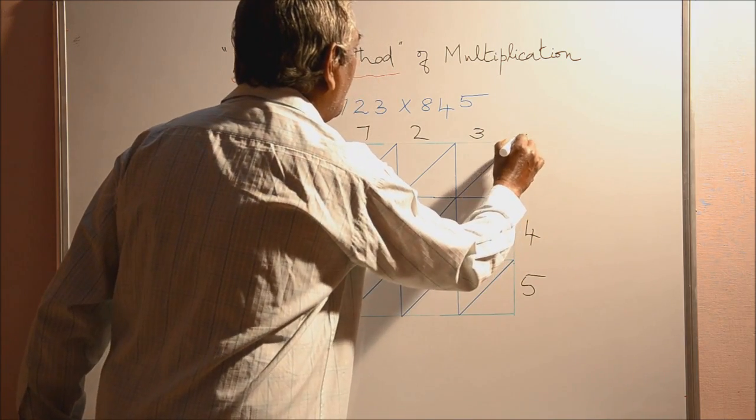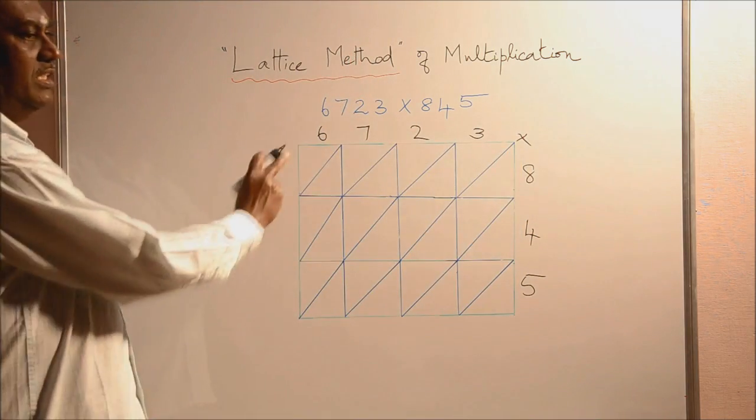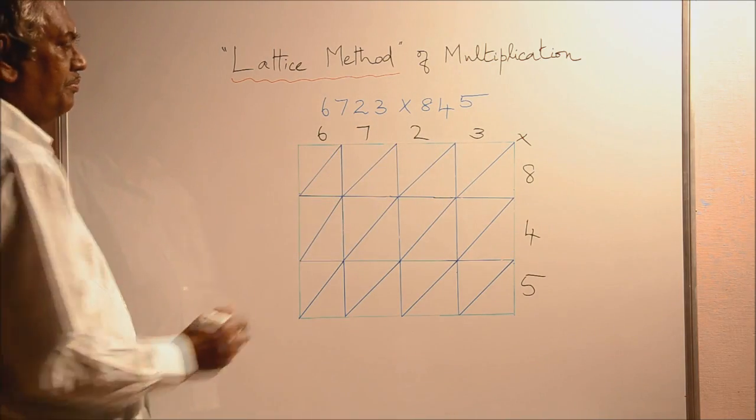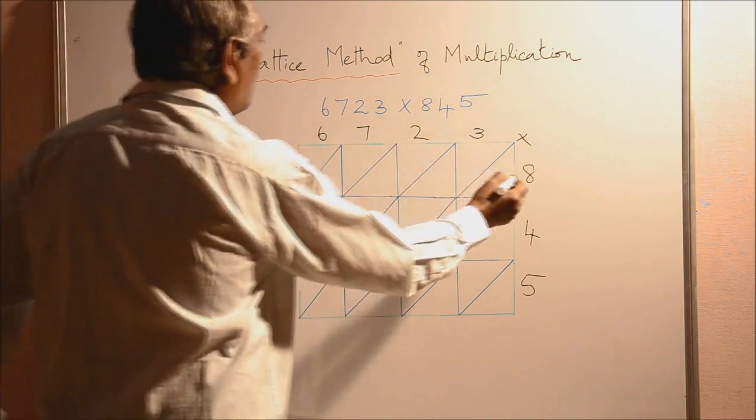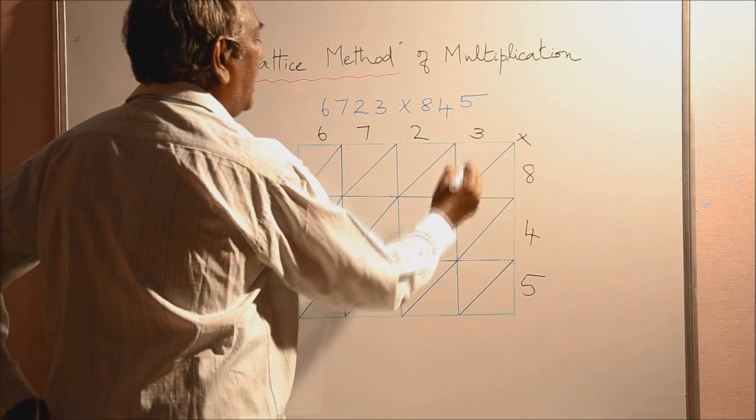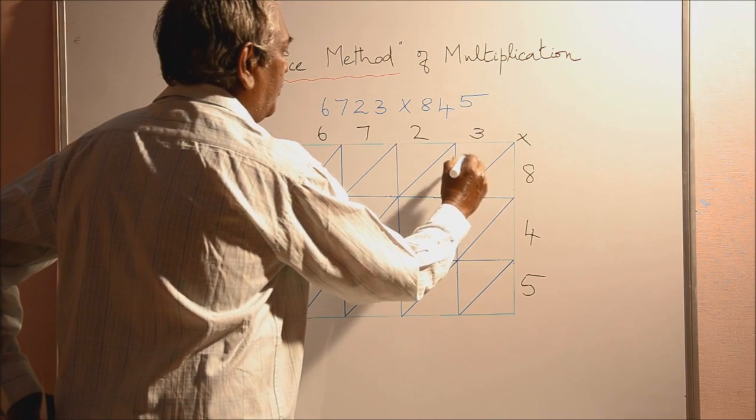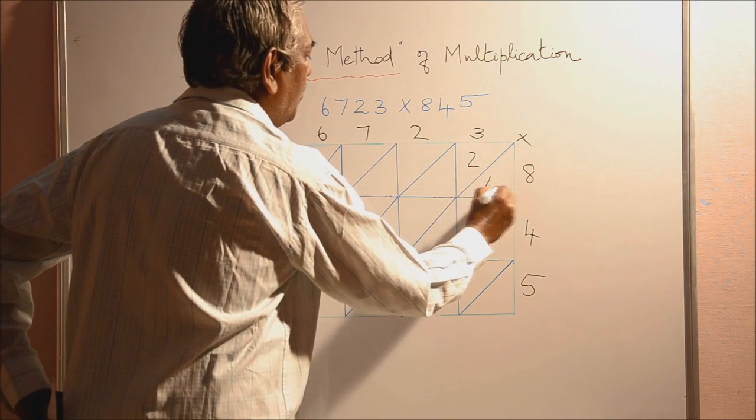Now we are going to multiply these two numbers, 6723 and 845. Just now we multiply this 8 and 3 and I put this as 8 and 3 is 24. So write 2 here and 4 here.